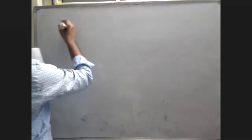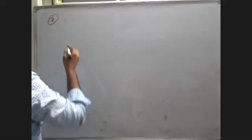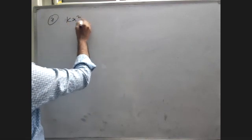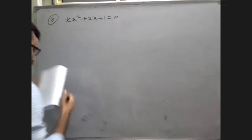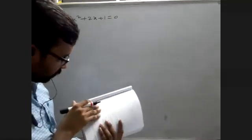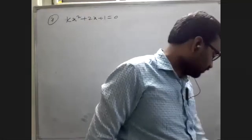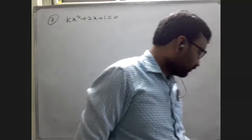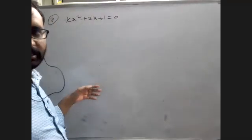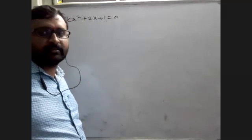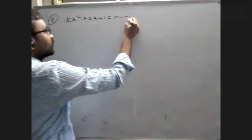Example 7: Find the set of values for K for which the equation Kx² + 2x + 1 = 0 has distinct real roots. Distinct real roots means discriminant Delta greater than 0.